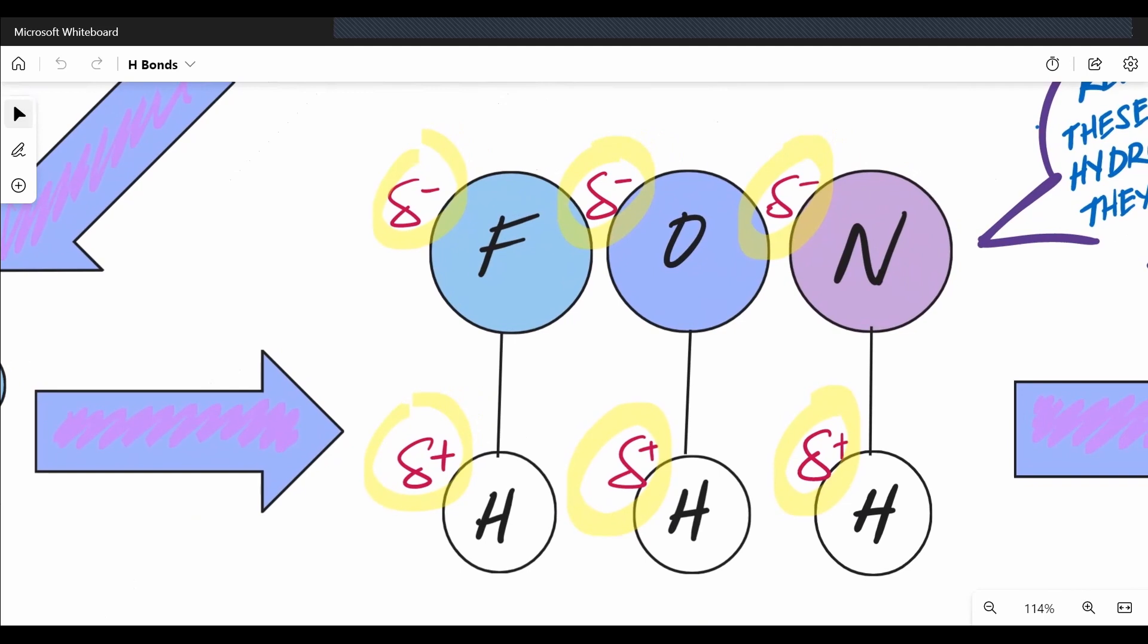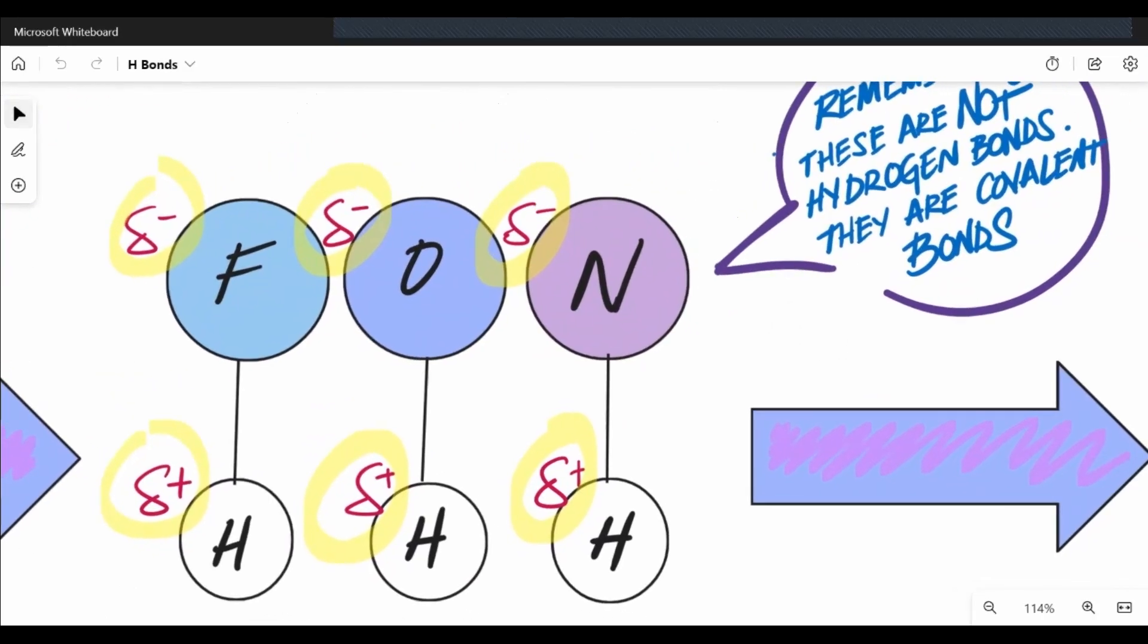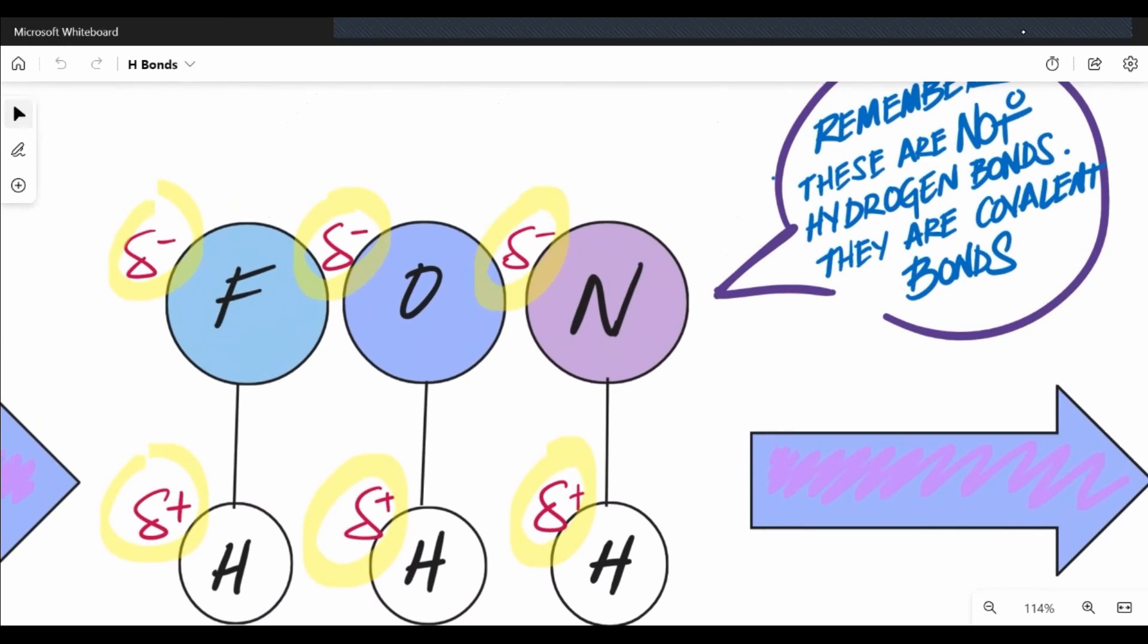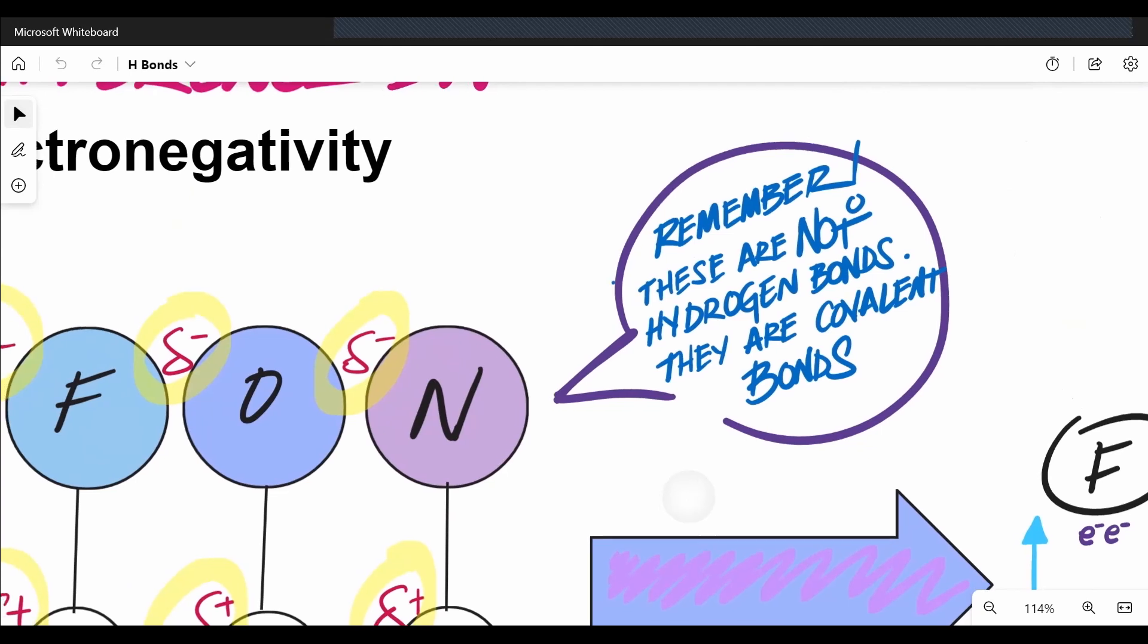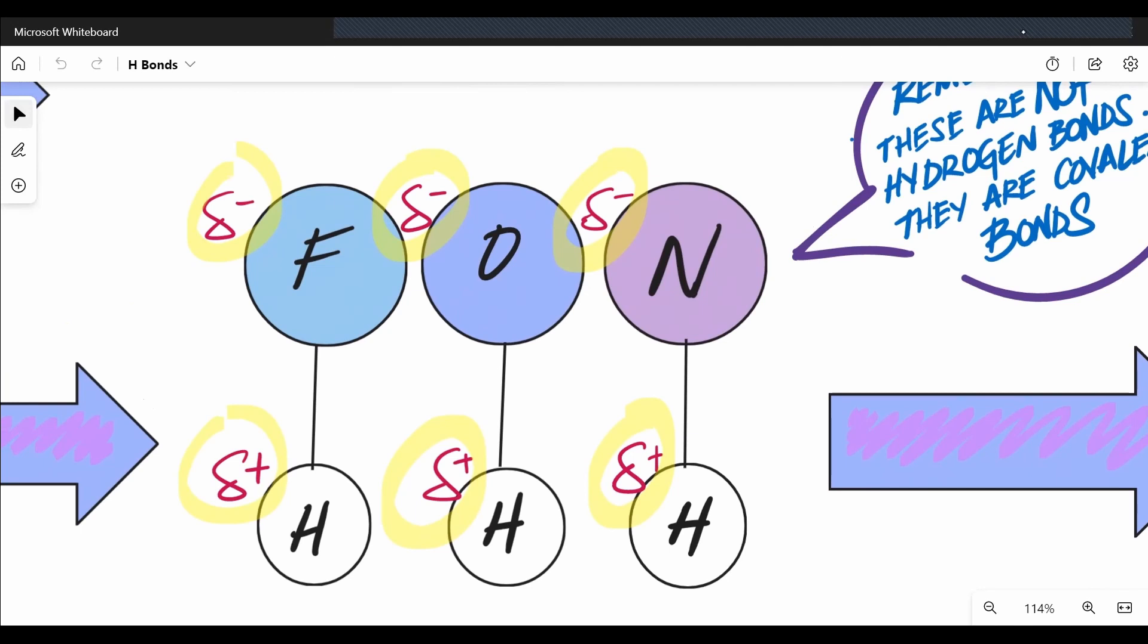Turns out that when H, hydrogen, bonds to these three elements, fluorine, oxygen, and nitrogen, we get a dipole. So we get an area of the bond that's positively charged and area of the bond that's negatively charged. And you can see here, the area of the bond that is positively charged is on the hydrogens and the area that's negatively charged is on phone, fluorine or oxygen or nitrogen. Now, please remember, these are not hydrogen bonds that I'm showing you in this picture. They're just covalent bonds. Those black lines just represent shared electrons.